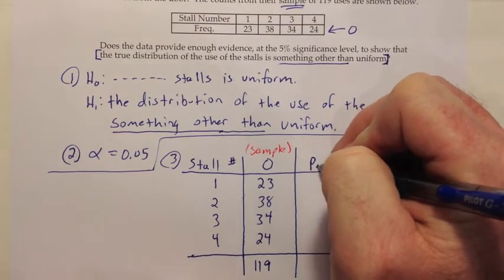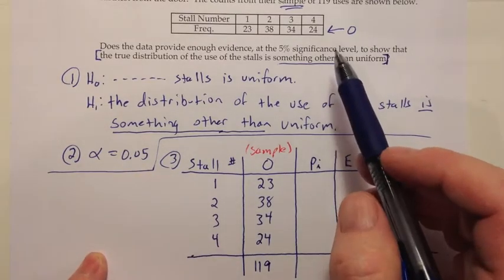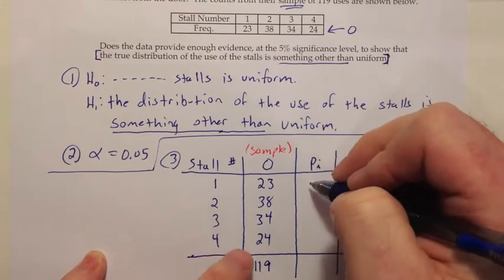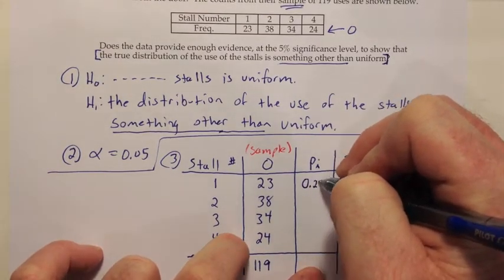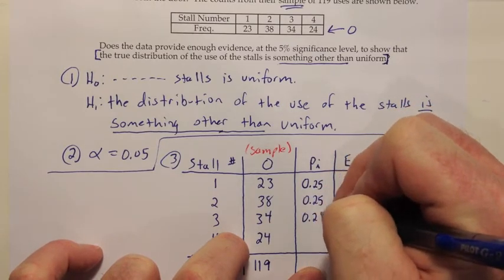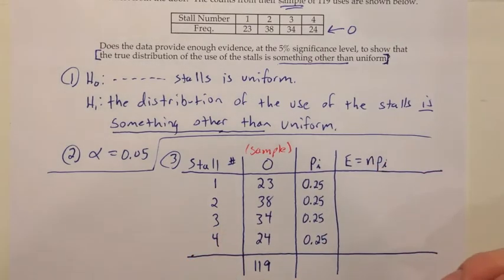So we want to think what would the value of E be for these four stalls if the distribution of the use was uniform. And so what is uniform? It's that kind of flat, everything's the same height sort of curve. And so what that means in terms of the values of PI is that they would all be the same. So for the different values of PI, P1, P2, P3, P4, if it's uniform, you'd take the 100% and you'd divide it into the four categories equally. And that means there'd be a 25% chance of use on each one of these if it was uniform.